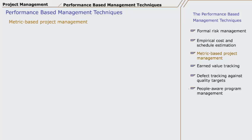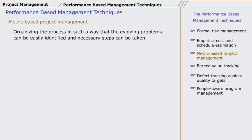Metric based project management means organizing the process in such a way that evolving problems can be easily identified and necessary steps can be taken. For example, if you develop a CD using Flash and in the meanwhile a new technology emerges, metric based project management demands that you should have an idea of the emerging technology before its introduction in the market, and develop your product so that after making a few changes, you could adopt the new technology.